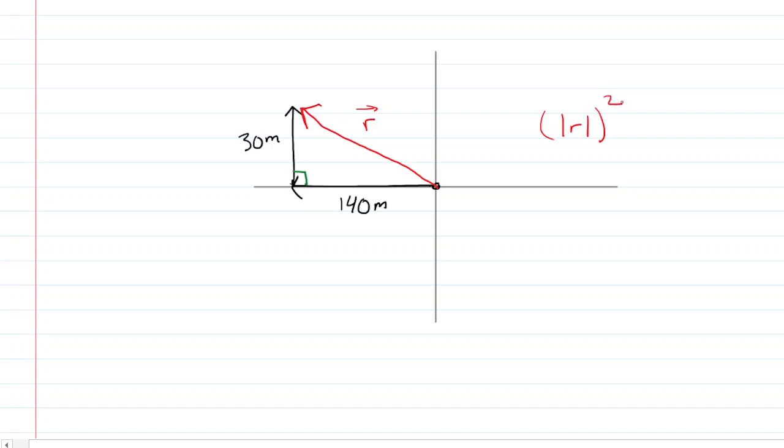When you're plugging into the Pythagorean theorem, we're just going to use the magnitude because that's all we're looking for in this question, part c. And then that's going to equal 140 squared plus 30 squared. So let's just pick up our calculators, simplify the right hand side, you're going to get 20,500.